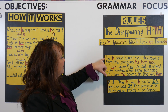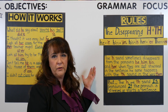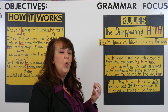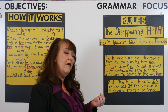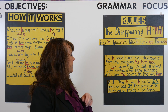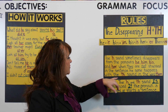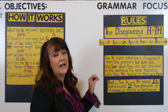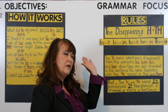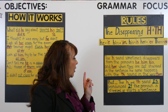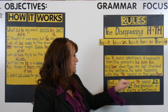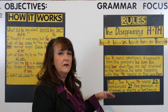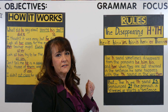The sound H sometimes disappears from those pronouns — he, him, his, and her — when they are not stressed. The same thing happens with the TH sound in the word them. So if those sounds are not stressed, they just disappear. But they're pronounced — the H and the TH — if the pronoun is stressed or if the pronoun starts a sentence.